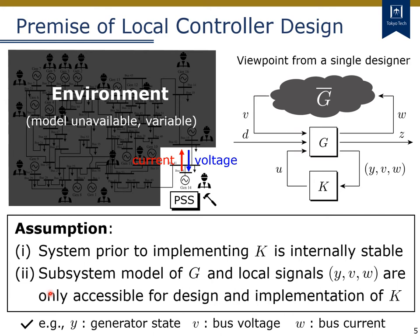The second item states that for the design and implementation of a local controller K, we assume accessibility only to the local subsystem model and the local output signals, denoted here by Y, V, and W. Here, Y denotes a usual measurement output, and V and W denote the interconnection input and output of the subsystem G, used for the interconnection with the environment G-bar. In terms of power systems control, Y represents the generator state, V denotes the local voltage, W denotes the local current. Furthermore, the evaluation output Z denotes the frequency deviation, and the disturbance D denotes the disturbance due to bus faults.